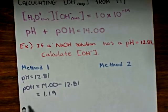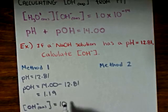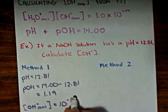We also know from past examples that the hydroxide ion concentration is equal to 10 raised to the exponent of the negative pOH.